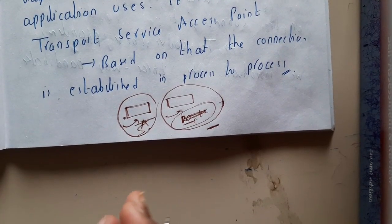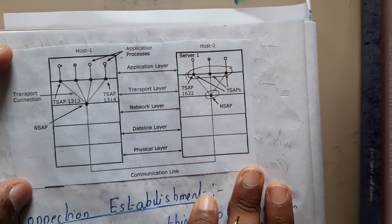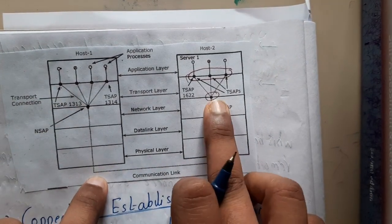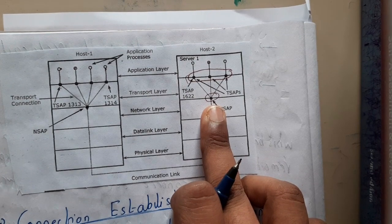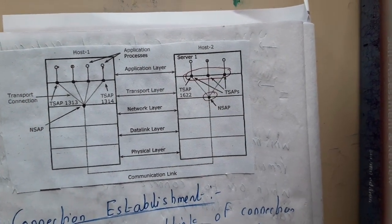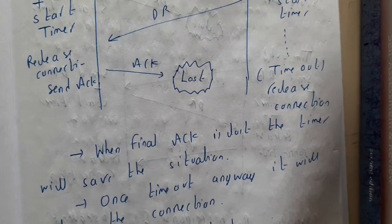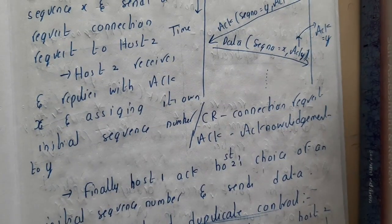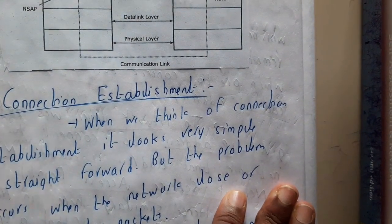Based on the communication we need to do, some processes are involved. A small example: from an application, data transmits through all the layers and reaches the network. Once it reaches the network, based on the port number specified by the sender, the application is identified. Now let us go through the three major steps: connection establishment, transmitting the data, and terminating or releasing the connection.